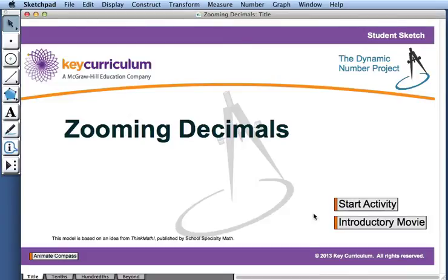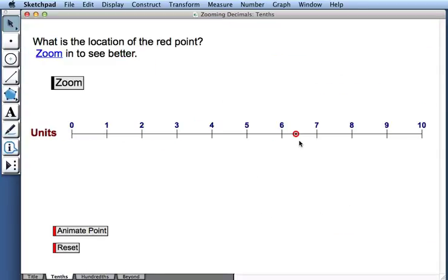This movie describes how to use the pair of activities called zooming decimals. We have a red point along a number line, and our goal is to determine the location of the point.